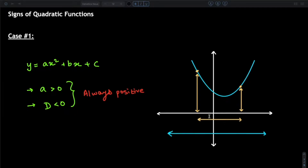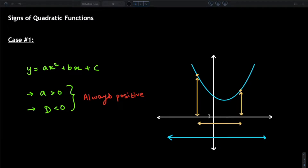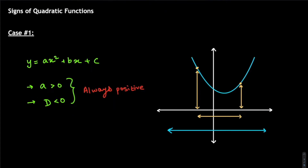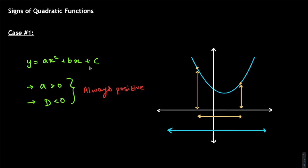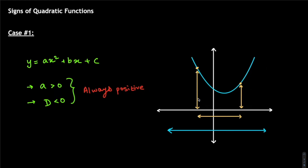Let's look at the first case. When a is greater than zero and D is less than zero. All the cases we'll discuss are in reference to y equals ax squared plus bx plus c. We're always talking about this form only. The value of a gives us the direction — whether the parabola opens upwards or downwards.